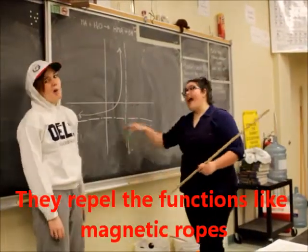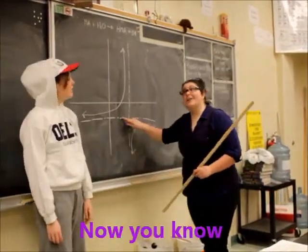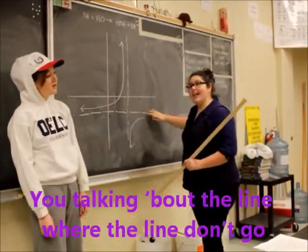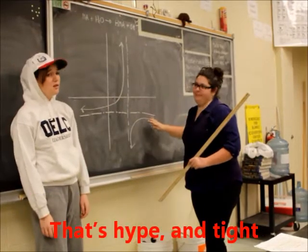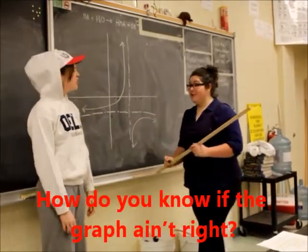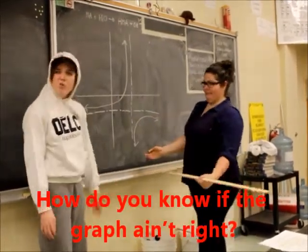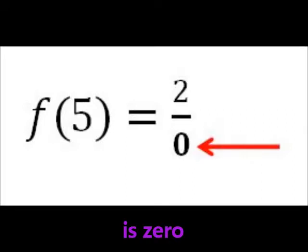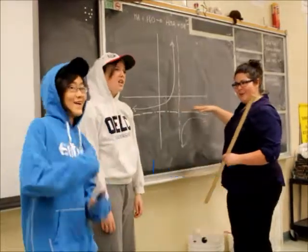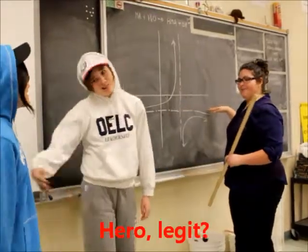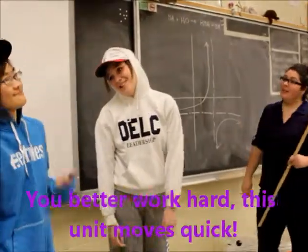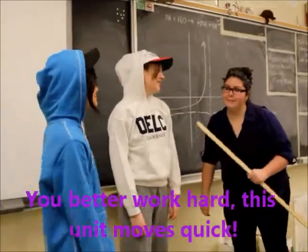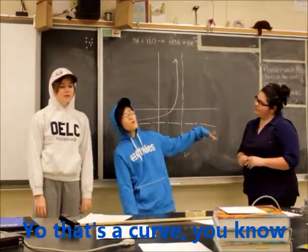They're called asymptotes, like magnetic ropes. Now you know — you're talking about the line where the line don't go. How do you know if the graph ain't right? Bottom is zero. One-to-one functions is one of my heroes. You better work hard, this is gonna move quick. That's a curve, you know.